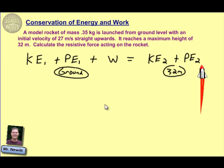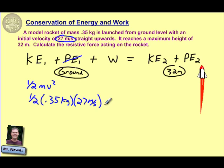We know the rocket starts with an initial velocity of 27 meters per second. So kinetic energy, one-half mv squared, that 27 meters per second of velocity is going to go in there. So I'm going to have one-half, mass of the rocket is 0.35, times that 27 meters per second. Now I have no potential energy, so I don't need to worry about that. I'm on the ground, so that part drops out.